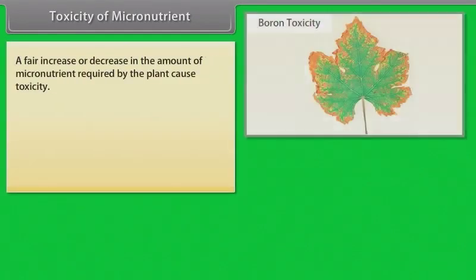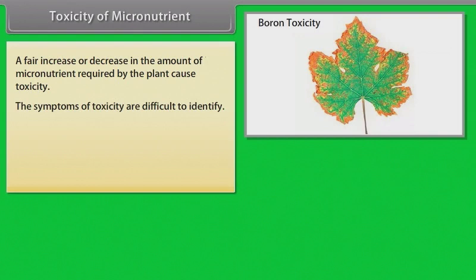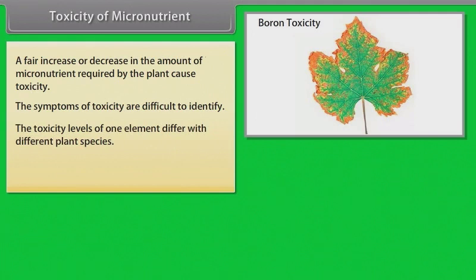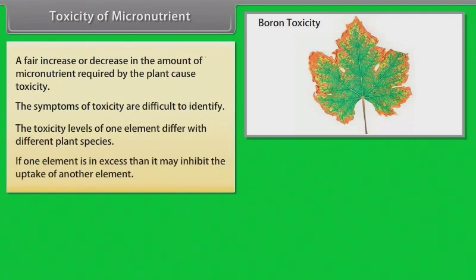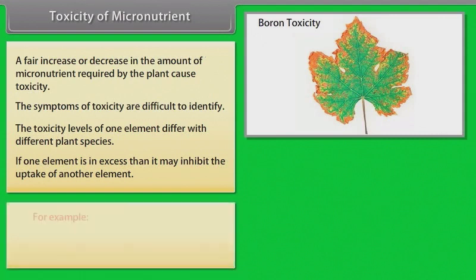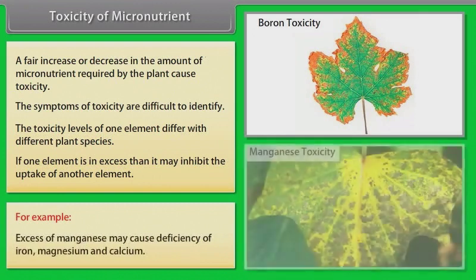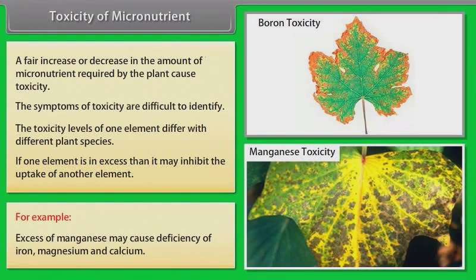Toxicity of micronutrients: a significant increase or decrease in the amount of micronutrient required by the plant causes toxicity. The symptoms of toxicity are difficult to identify. The toxicity levels of one element differ with different plant species. If one element is in excess, it may inhibit the uptake of another element. For example, excess of manganese may cause deficiency of iron, magnesium and calcium.